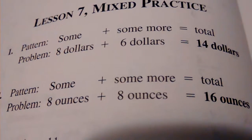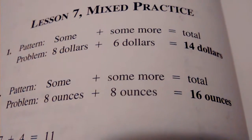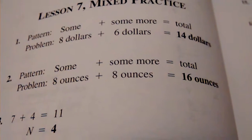Lesson 7. Number 1, $14. Number 2, 16 ounces.